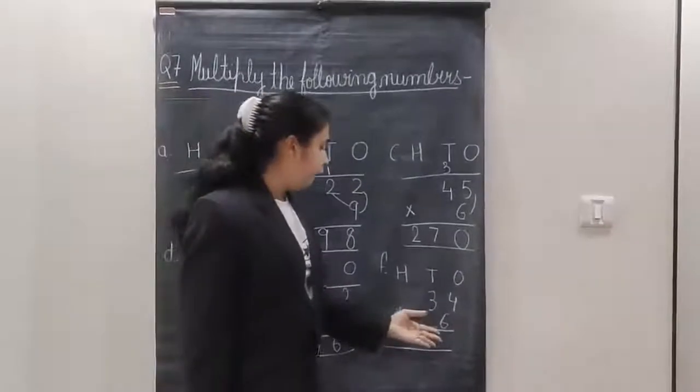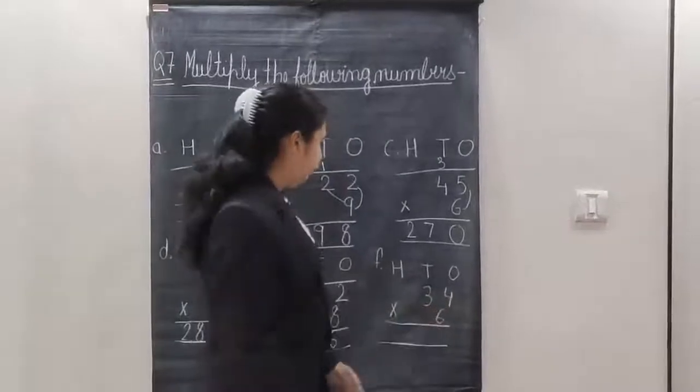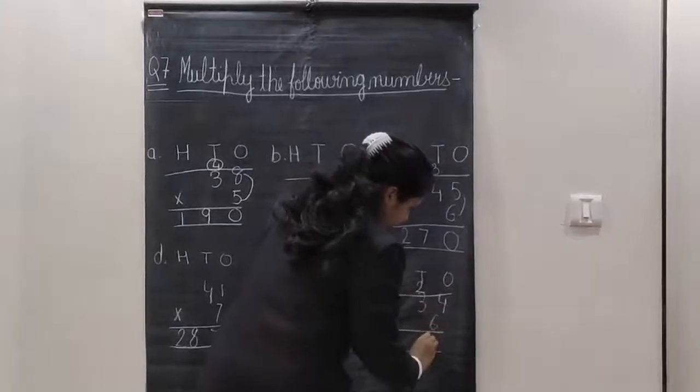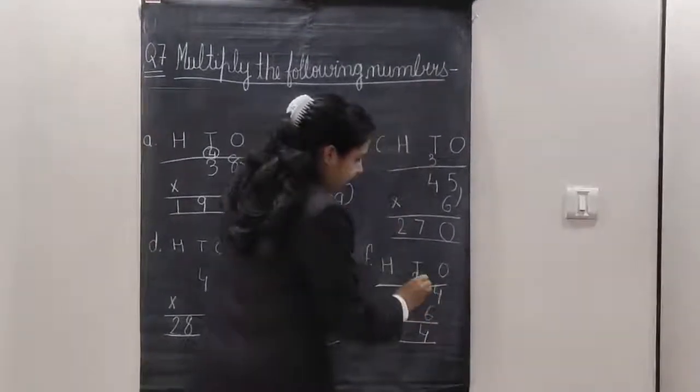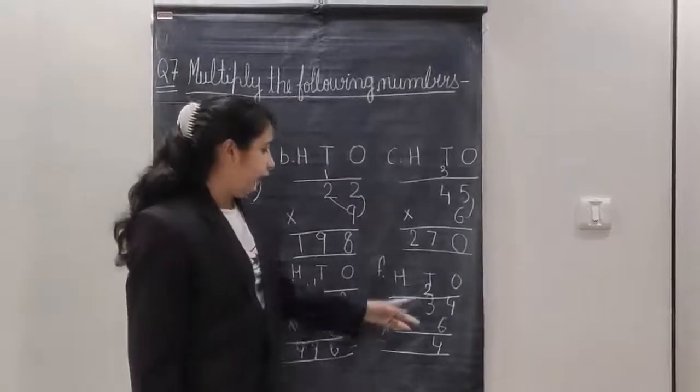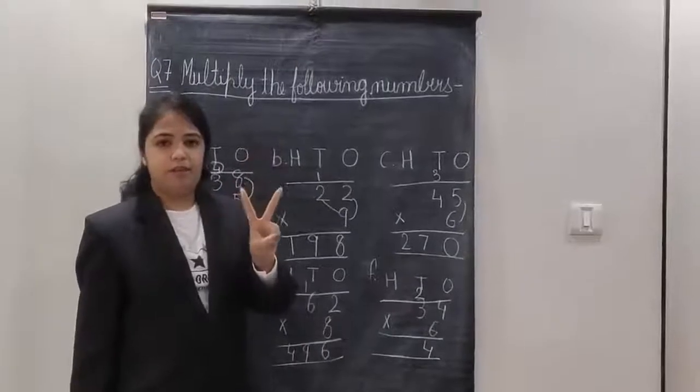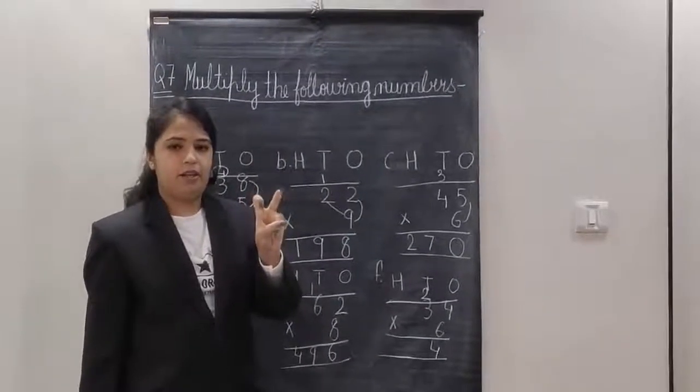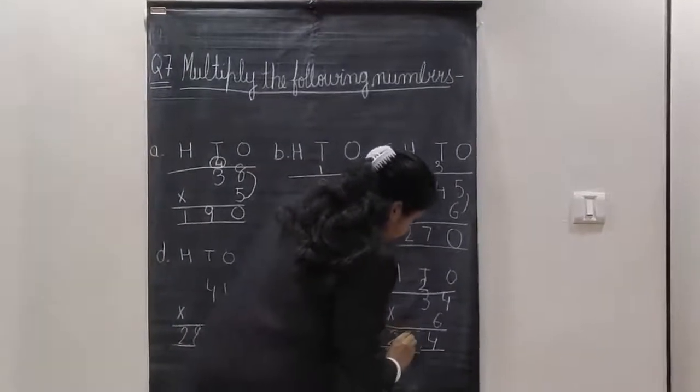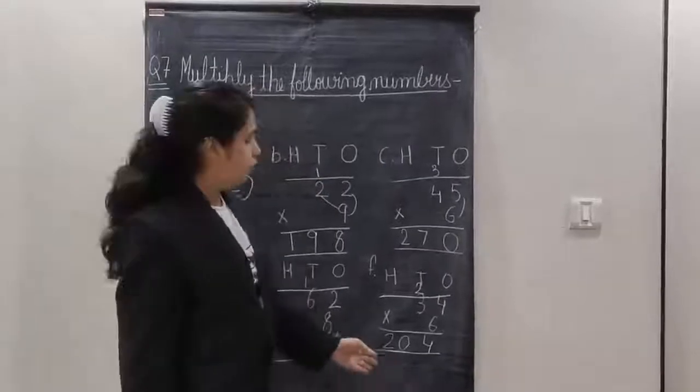Now, the last sum we are moving. 6 fours are, again, 24. 6 threes are. 6 ones are 6, 6 twos are 12, 6 threes are 18. And 18 plus 2. 18 in my mind, 2 on my fingers. After 18, 19 and 20. So, the whole number you will write, 204. So, the product of this question is 204.